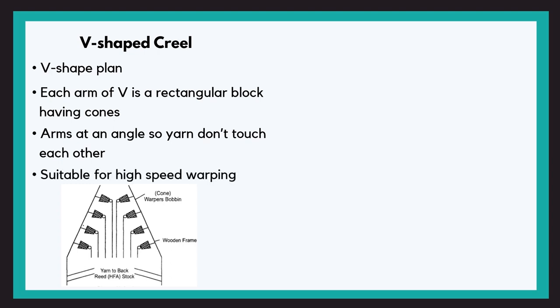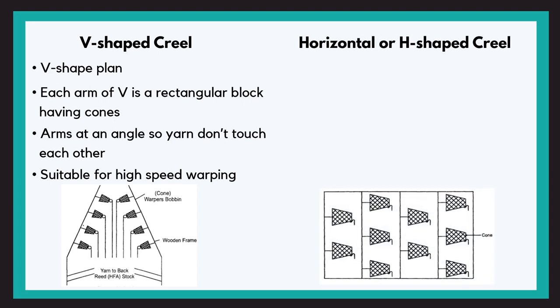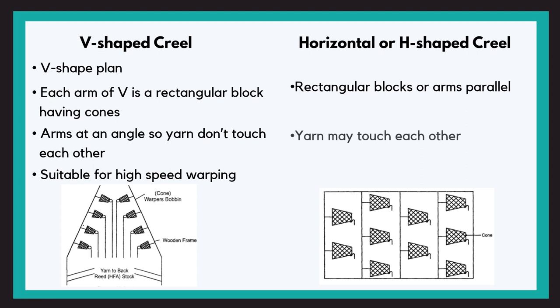In the H shaped creel, the rectangular blocks or arms are parallel to each other. That may cause the yarns to touch each other. So it is not very suitable for high speed warping and is used for slow speed warping.